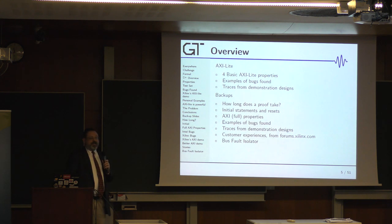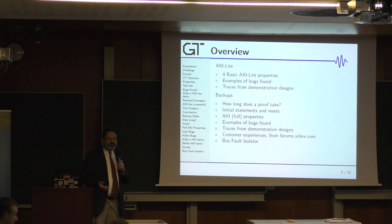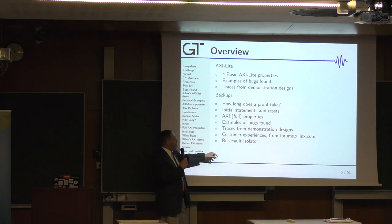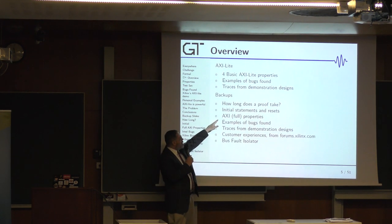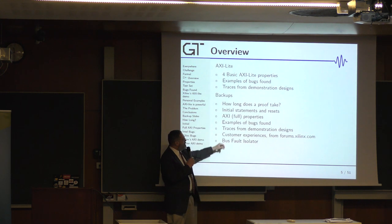So here's the overview of my talk now that we've gone through that background. What I want to talk about is some basic properties of AXI Lite. And then I'm going to show you some examples of the bugs you can find with those basic properties. And then I'll show you some traces from some of the demonstration designs I have, open source designs posted on GitHub. In the backups, the whole slides will be posted on GitHub as well. I've got how long does the proof take regarding AXI, some properties of AXI Full, more examples and traces.